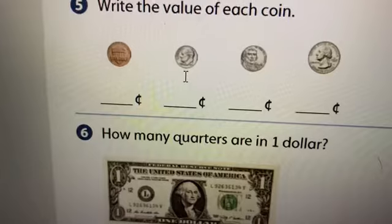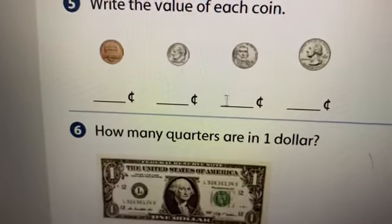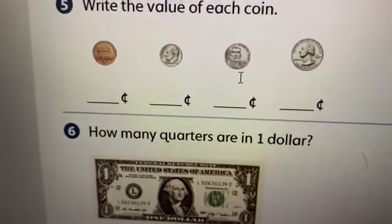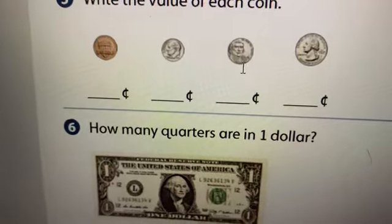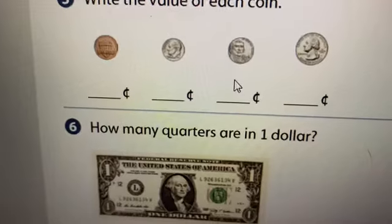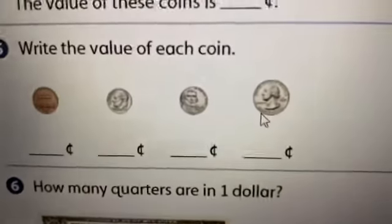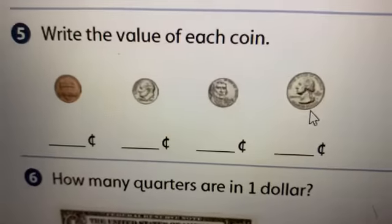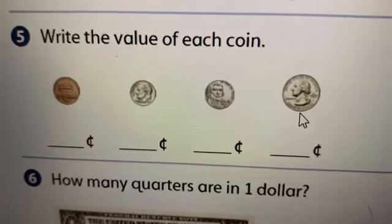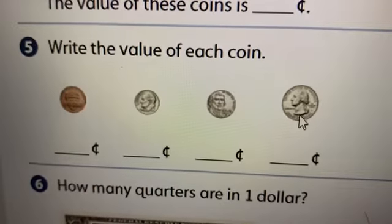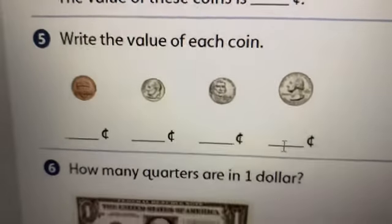What is this? Good. That's a nickel. And a nickel is worth, right? Five cents. And the last one is our biggest coin. It's called a, right, a quarter and it is worth 25 cents.